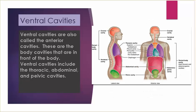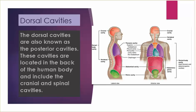Ventral cavities are also called the anterior cavities; these are the body cavities that are in the front of the body. Ventral cavities include the thoracic, abdominal, and pelvic cavities. Dorsal cavities, also known as the posterior cavities, are located in the back of the human body and include the cranial and spinal cavities.